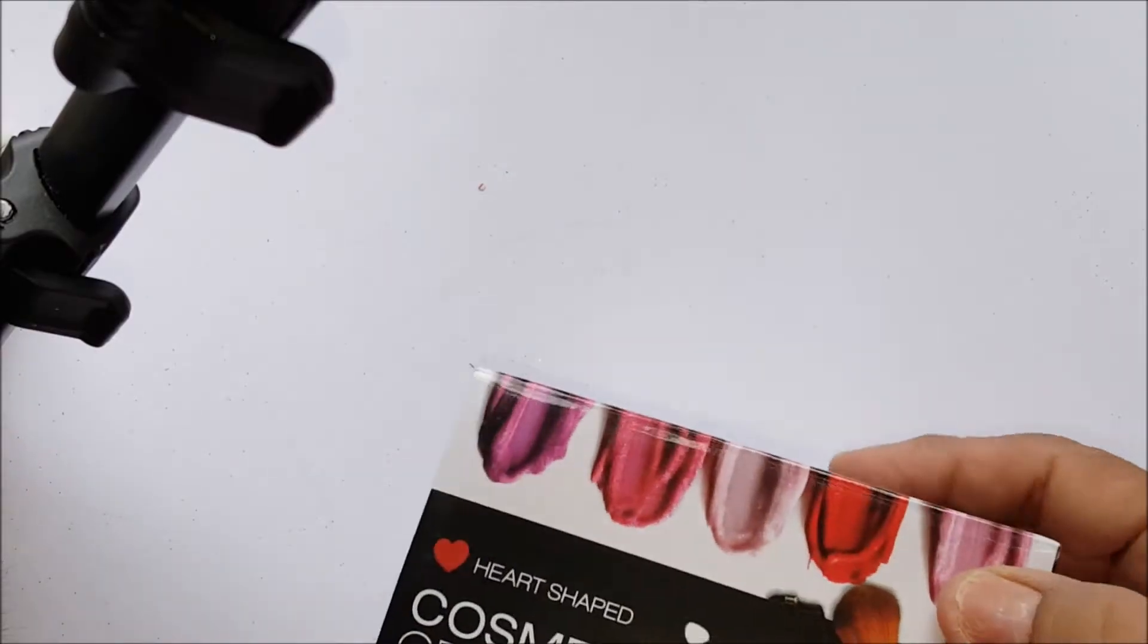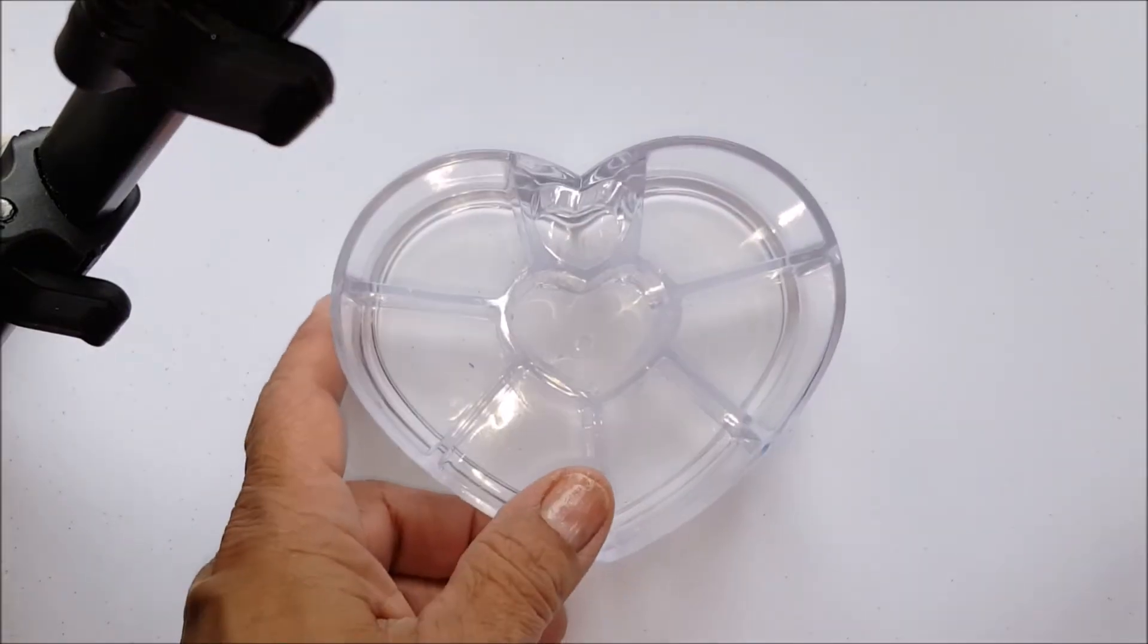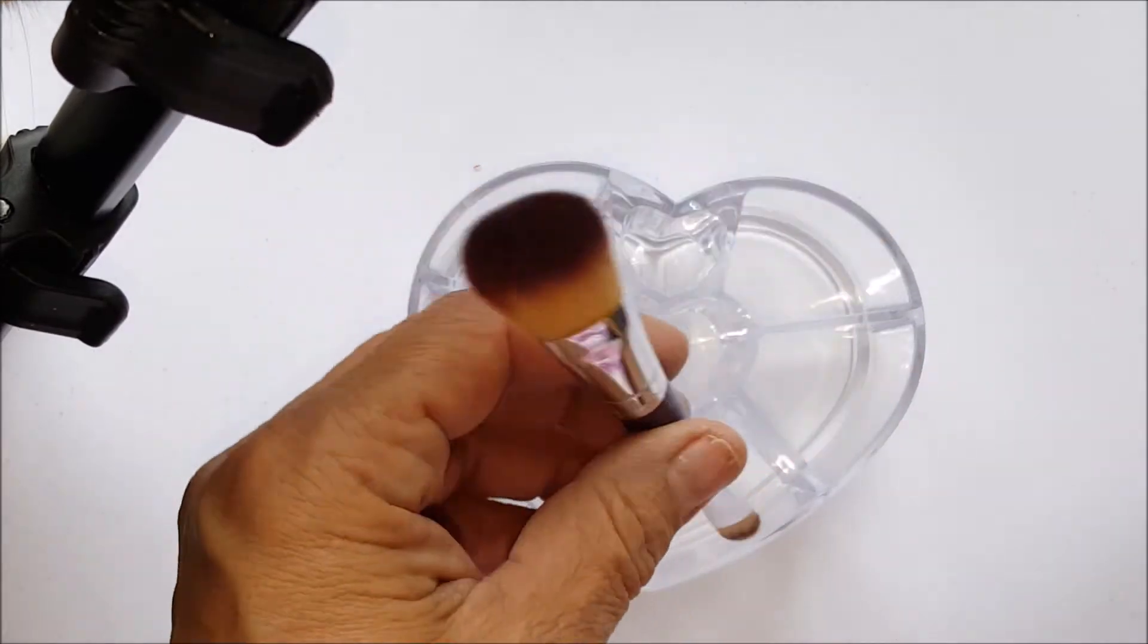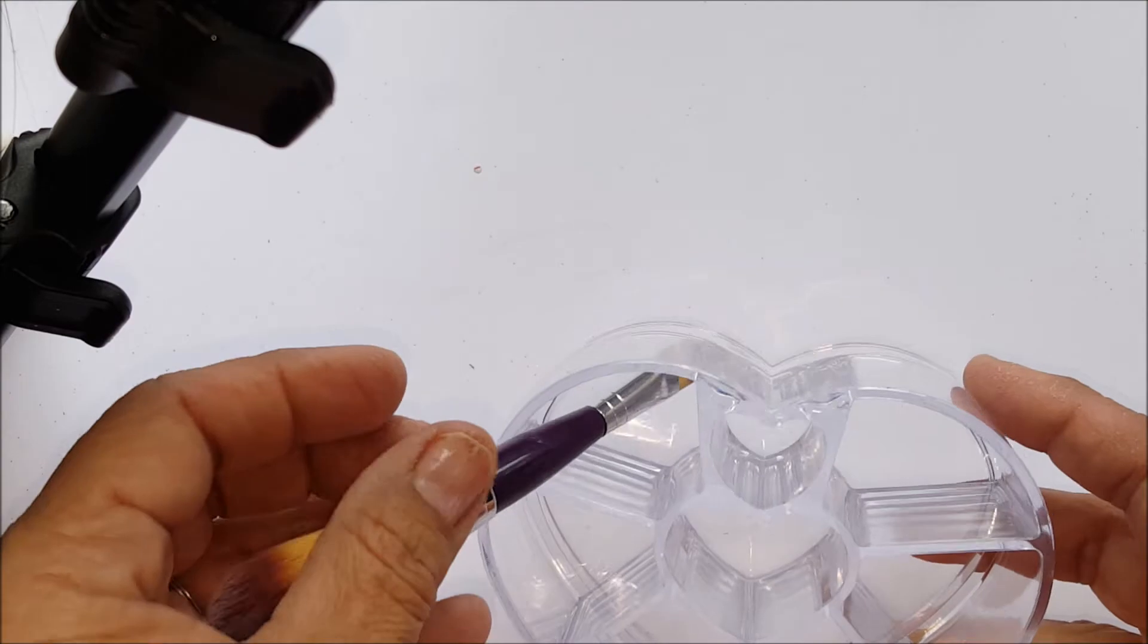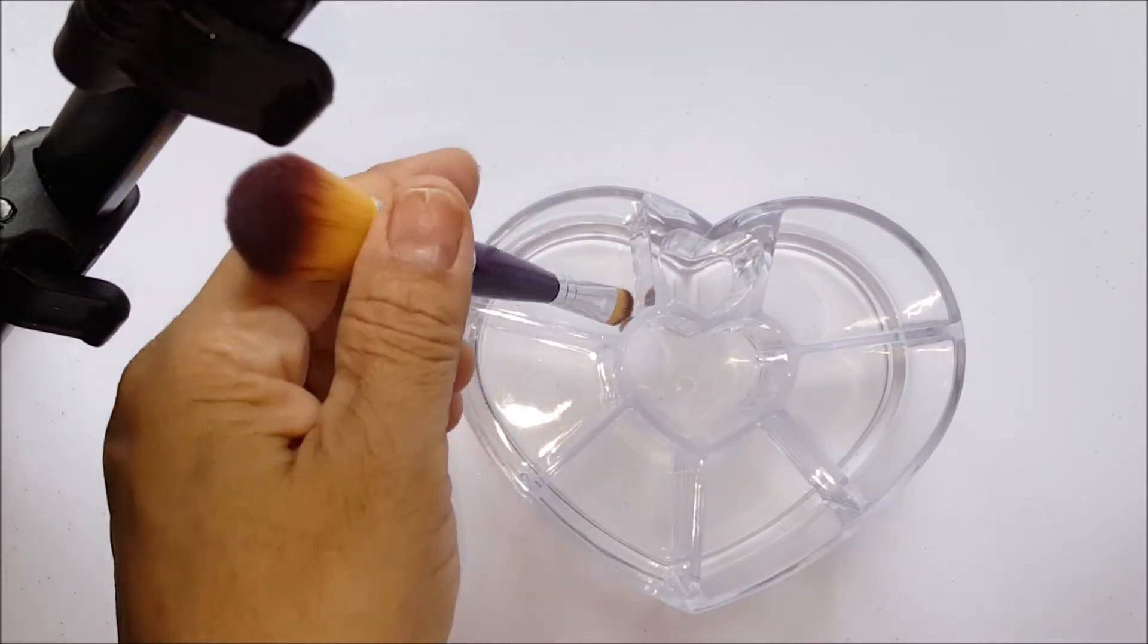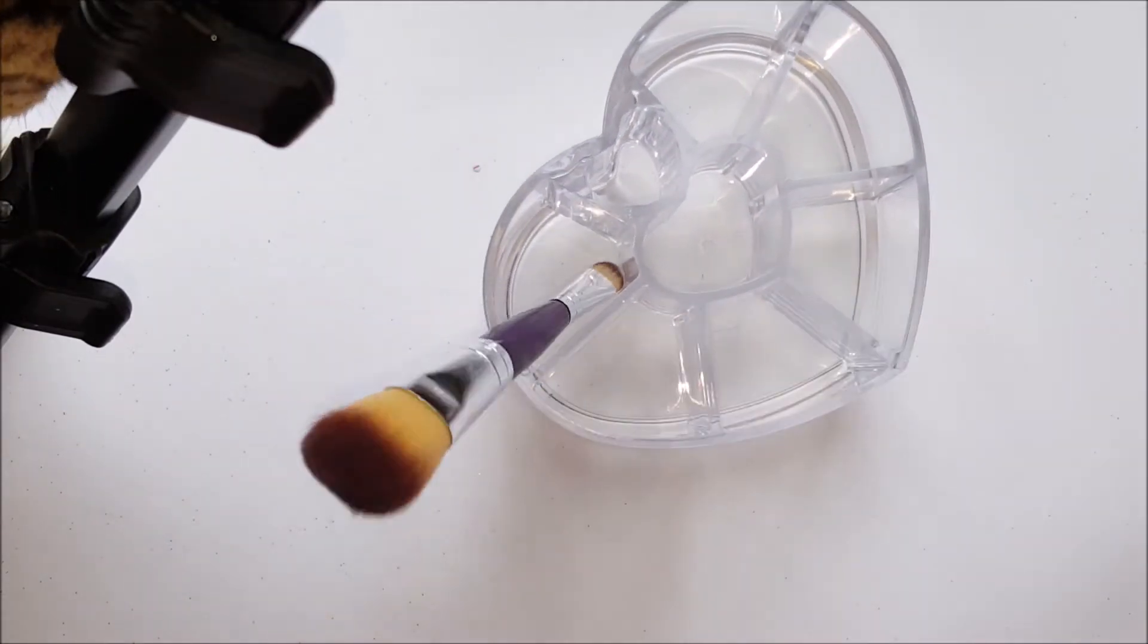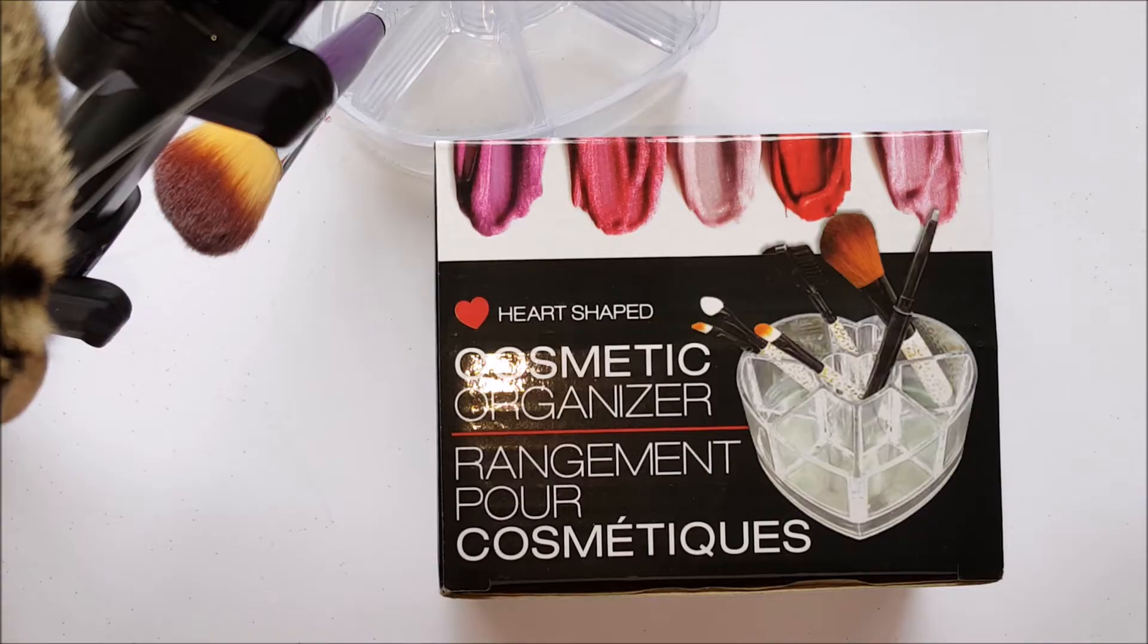And then I found this. It's called cosmetic organizer. You can use it just about for anything. But I'm going to put my little brush there so y'all can see what the height is on that maybe. It's not very deep, but you can use it for your brushes or maybe for just a lipstick or whatever really you want to use it for. So I bought two of those. And here's the other one. And it's shaped in a heart.